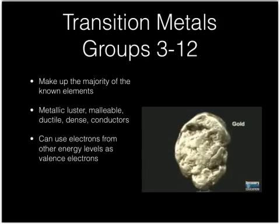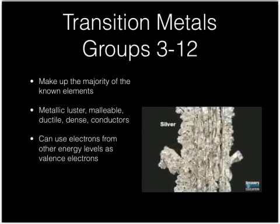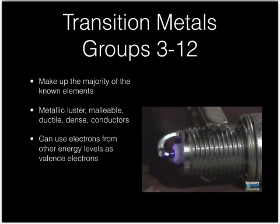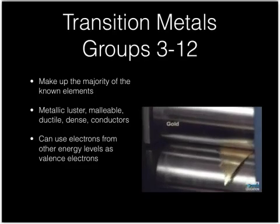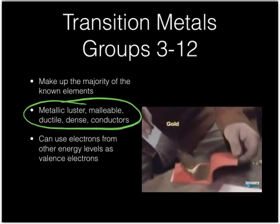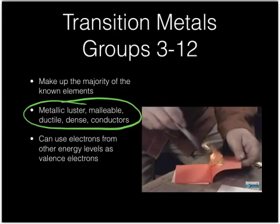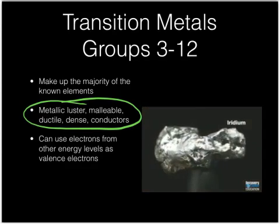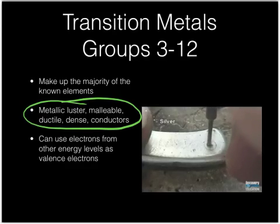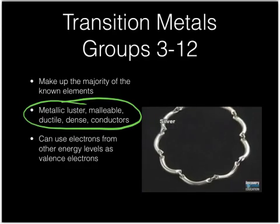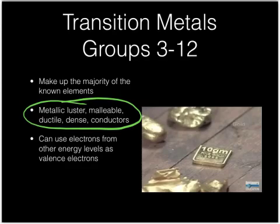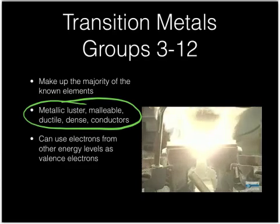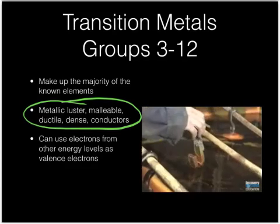Groups 3 through 12 are the transition metals. Multiple columns together can form a group when they share similarities. These have metallic luster — they're the metals you typically think of, like iron, copper, gold, and silver. They're malleable (smashed into sheets) and ductile (pulled into wires). They're dense — much more dense than the previous two metal groups — and they're very good conductors.